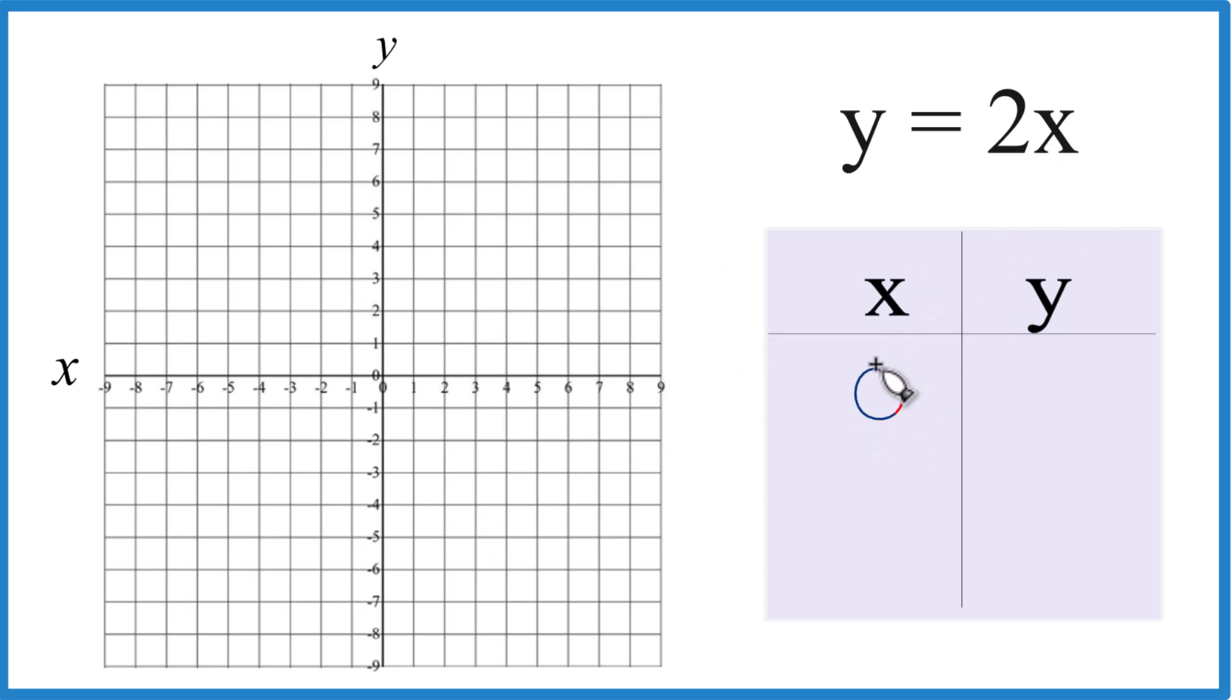So why don't we say 0? That's a good one to start with. If x is 0, 2 times 0 is 0. Kind of nice.